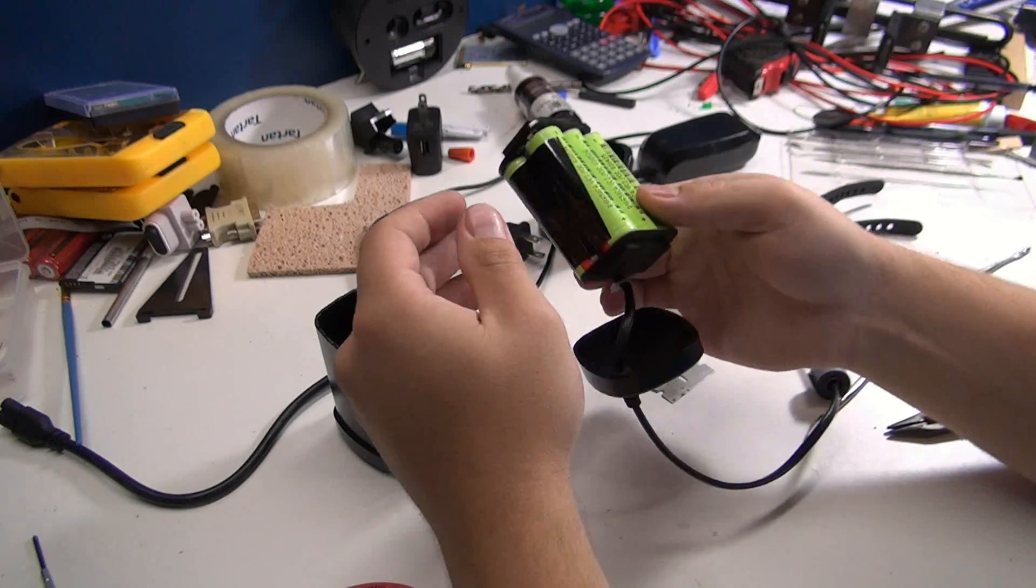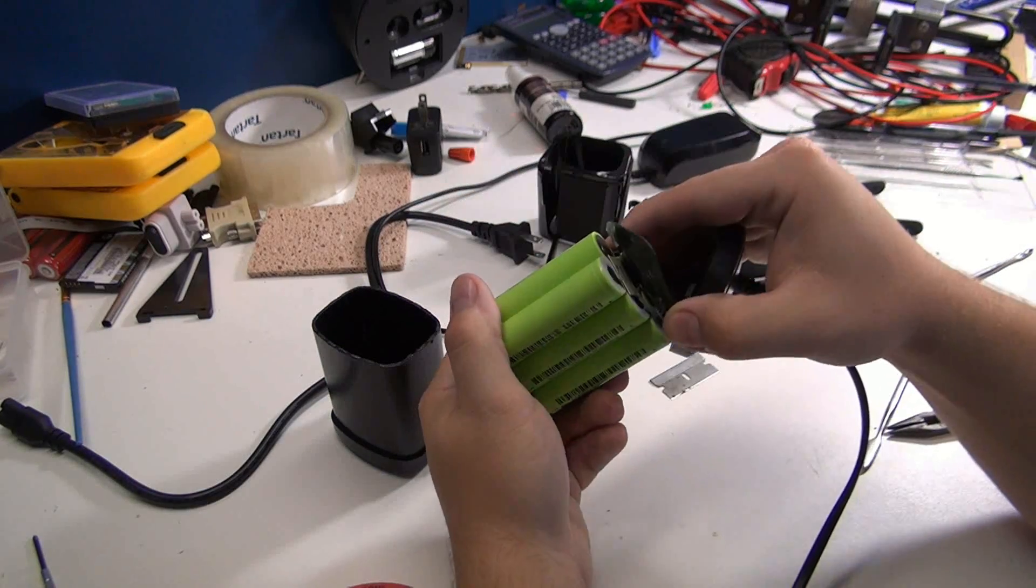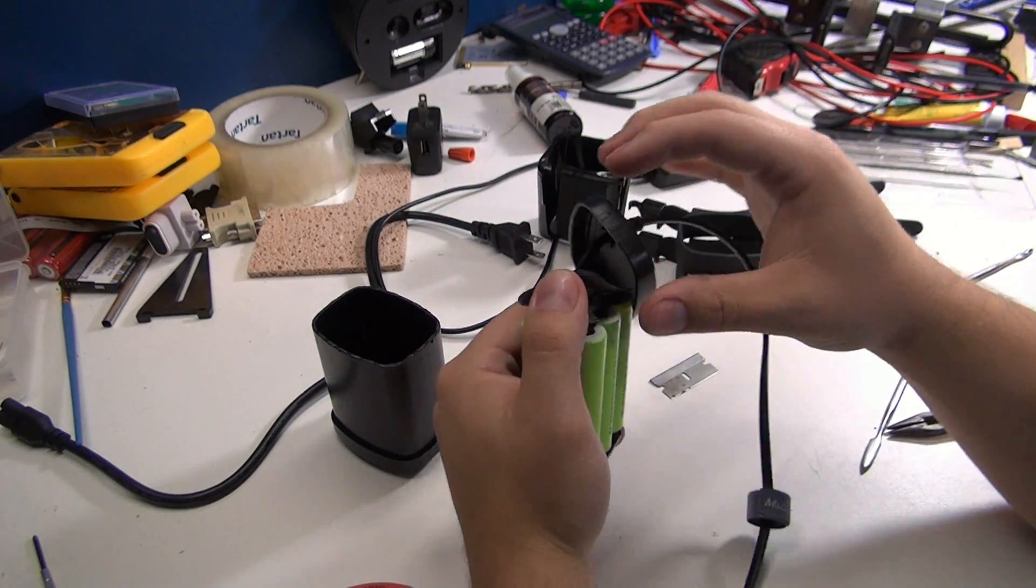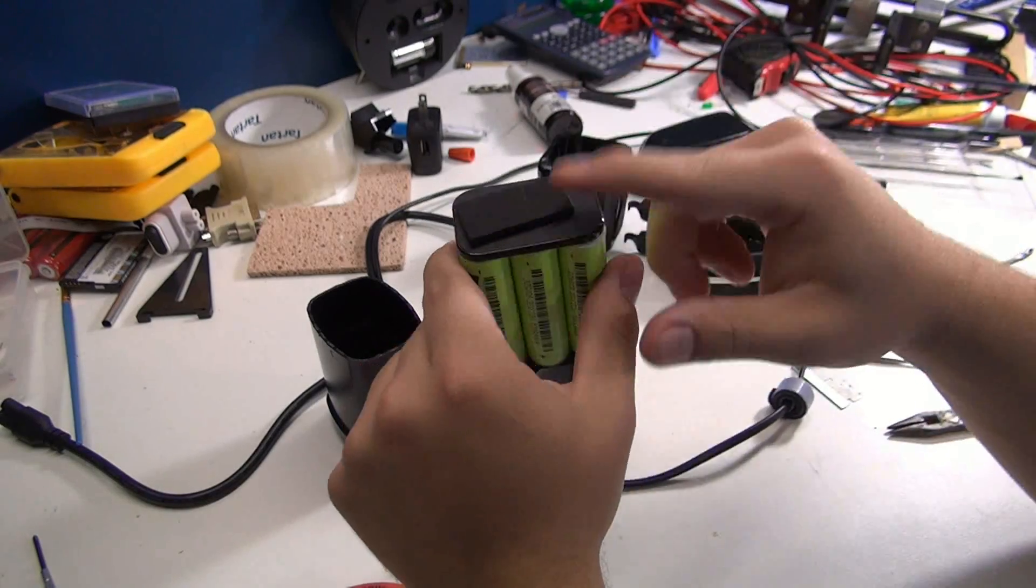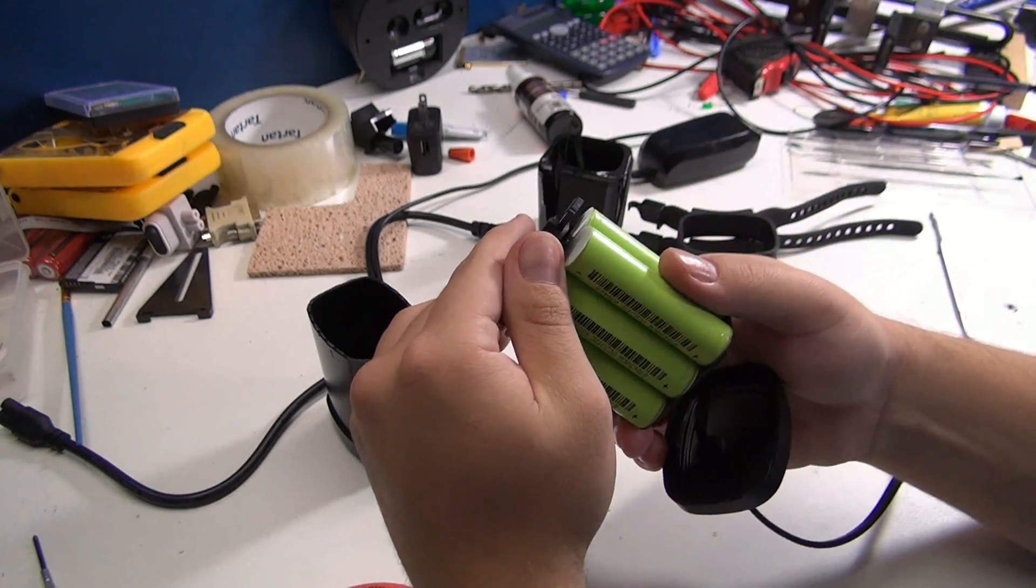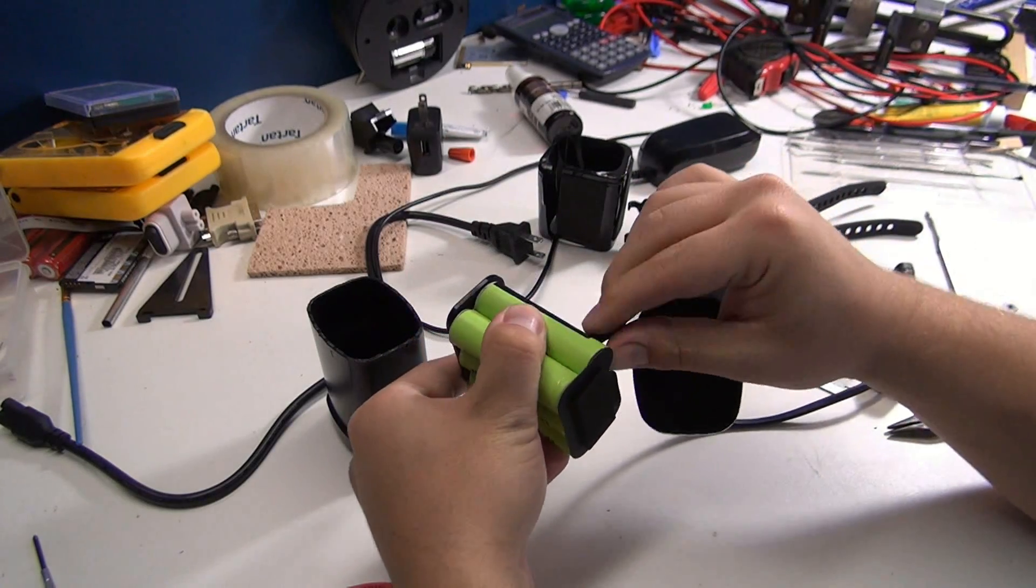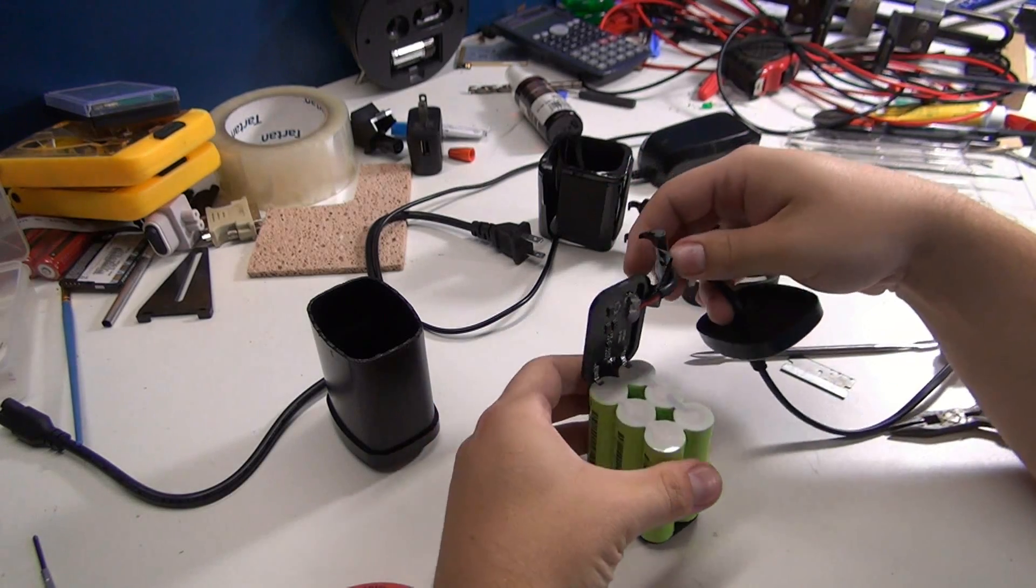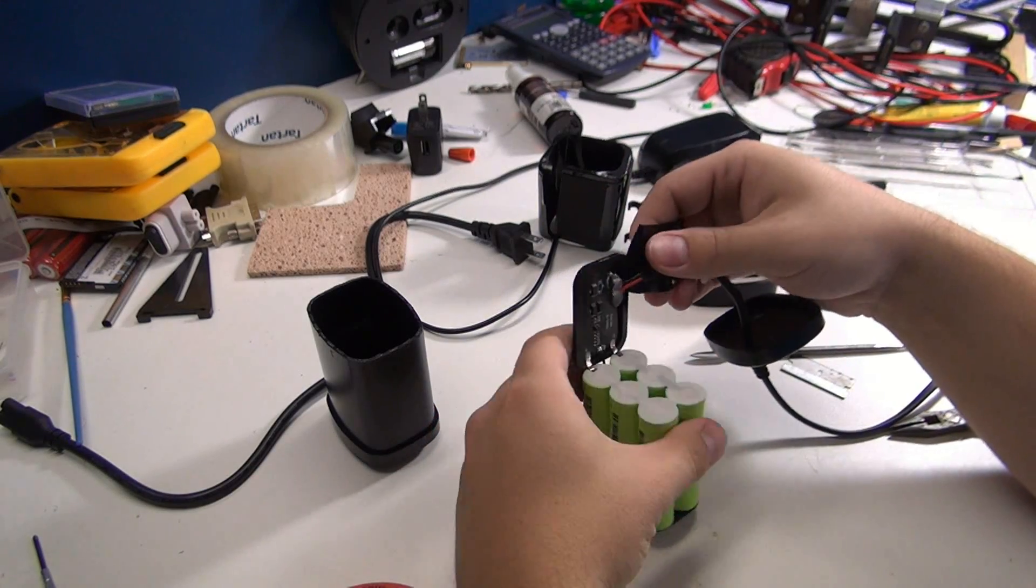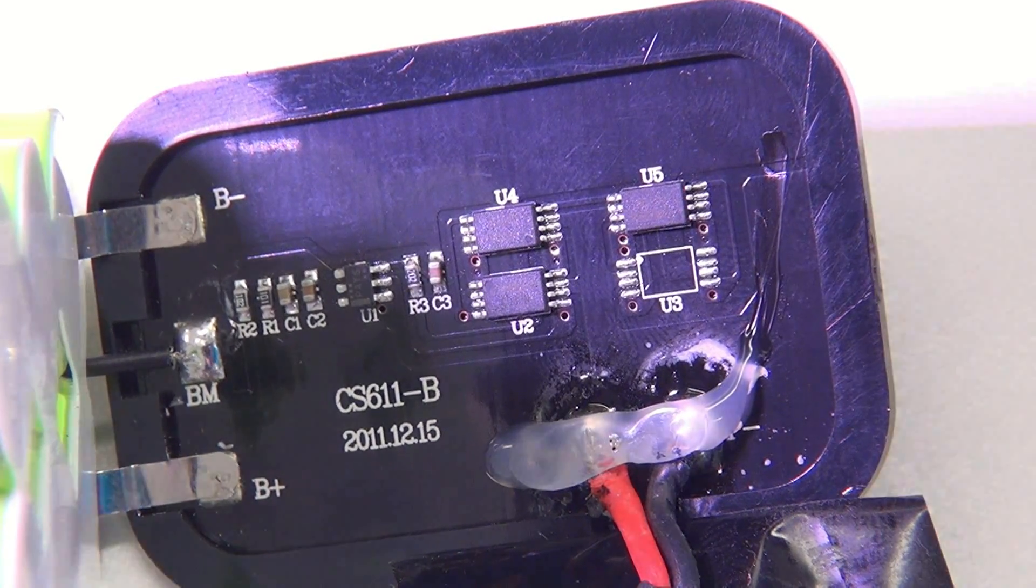So here we have the six lithium ion cells. Batteries are just connected with regular tab welds. So the charging circuit is on the bottom here. So here's a close look at the printed circuit board.